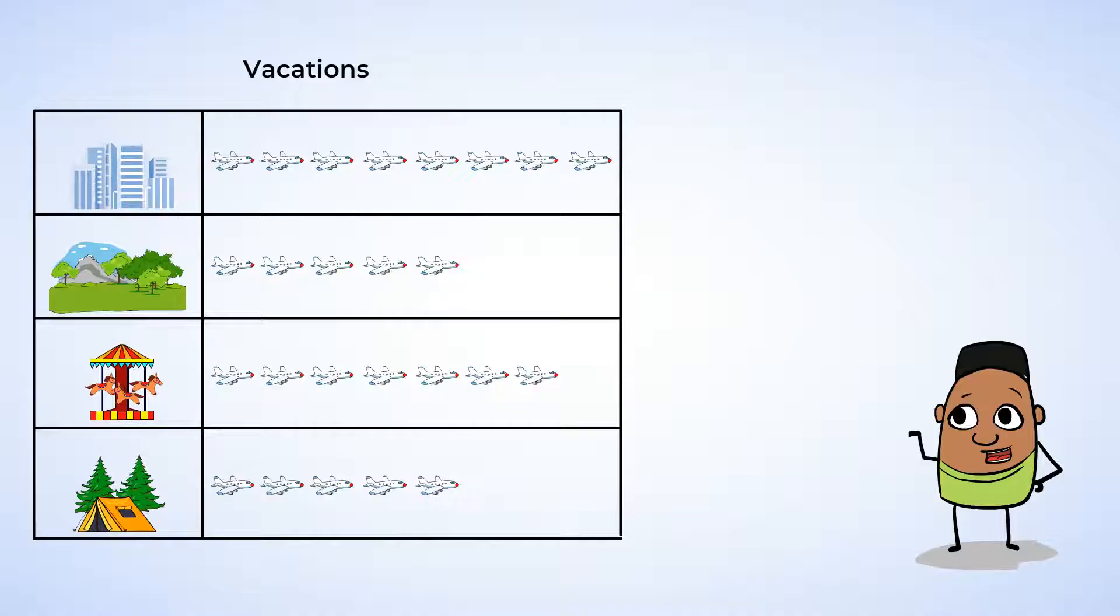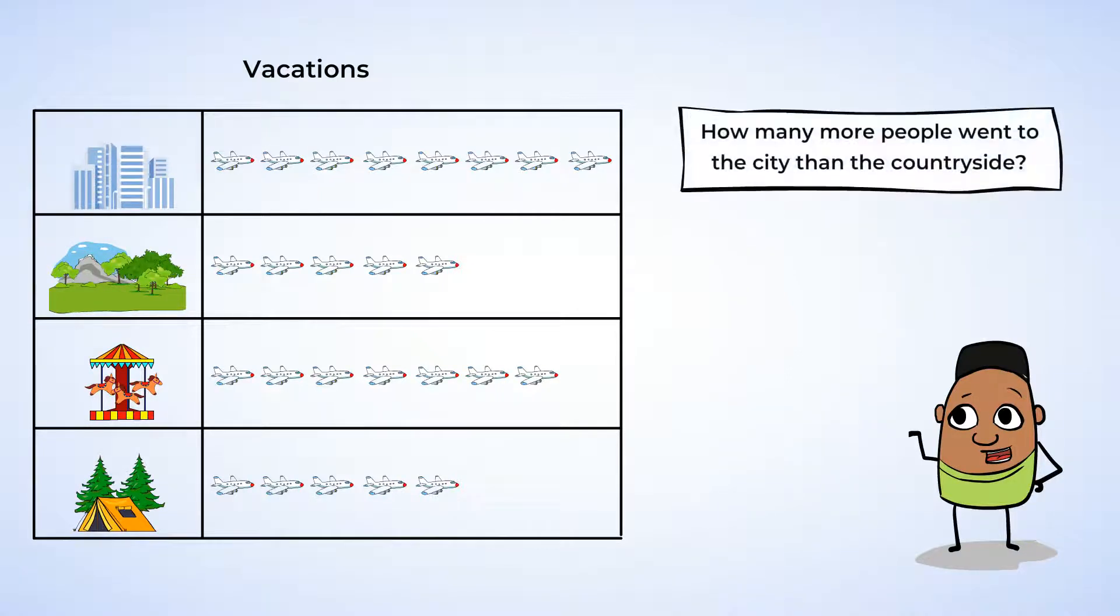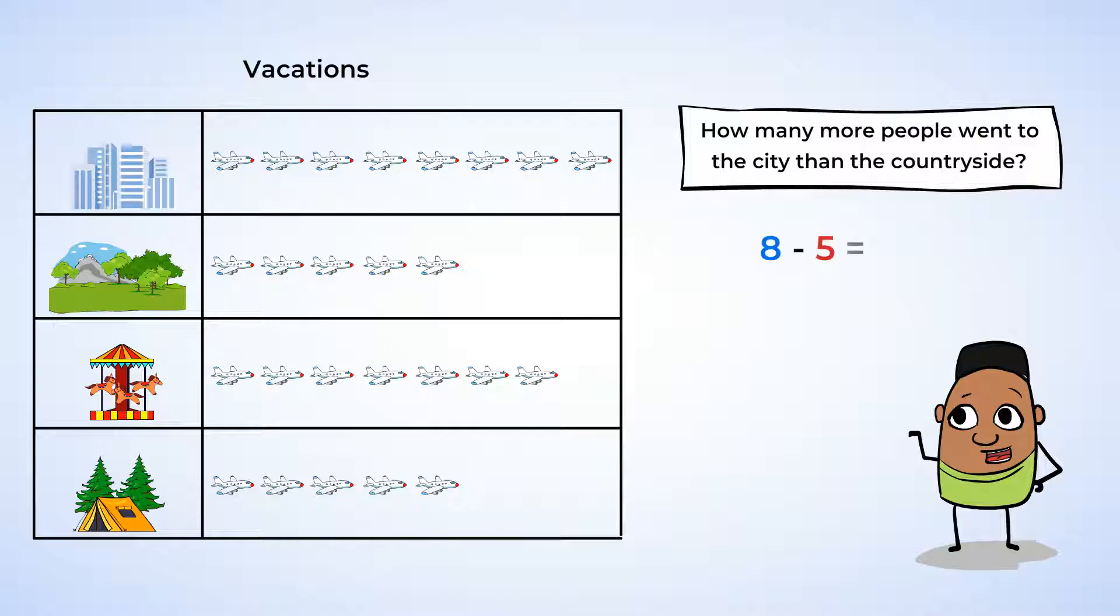Twenty-five people in all were asked about their most recent vacation. Now, let's dig into the data. We can see from the picture graph that more people recently went to a city on vacation than to the countryside. But how many more people went to a city than the countryside? This is a compare problem, and we will need to subtract. Eight people went to a city, and five people went to the countryside. So, subtract five from eight. Eight minus five is three. Three more people went on a city vacation than to the countryside. Oh, great job figuring that out!